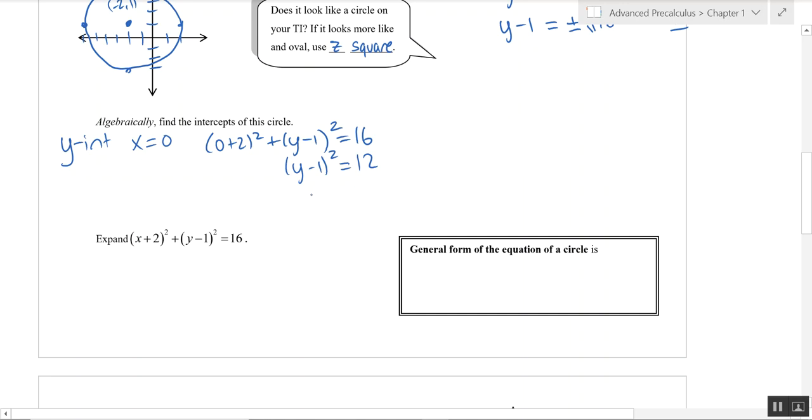And if I square root both sides, I get plus or minus the square root of 12. And let's add one. And root 12, we can rewrite that as two root three. So our intercepts here, zero and one plus or minus two root three, those are two Y-intercepts.